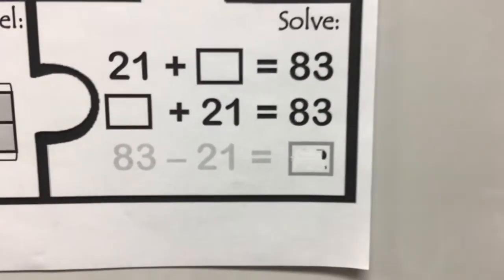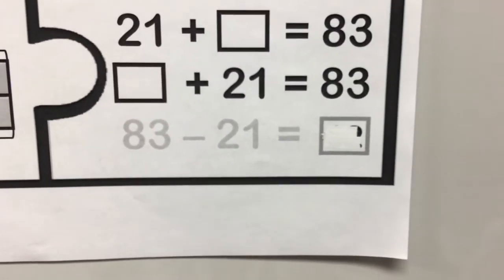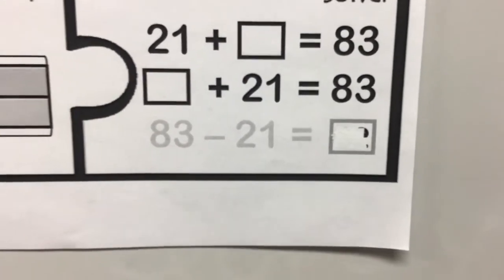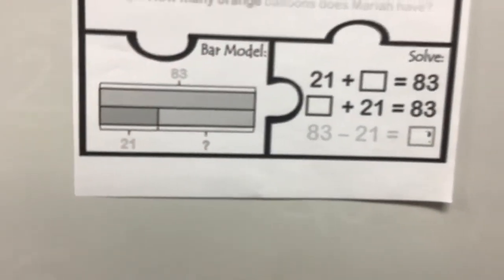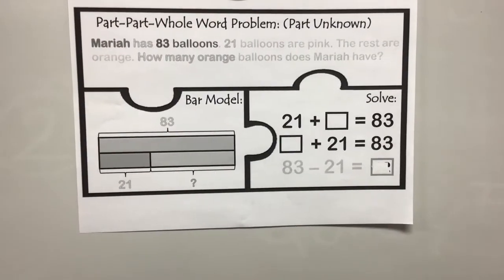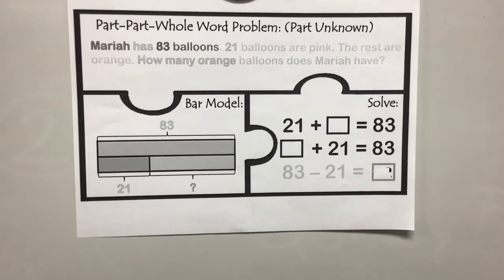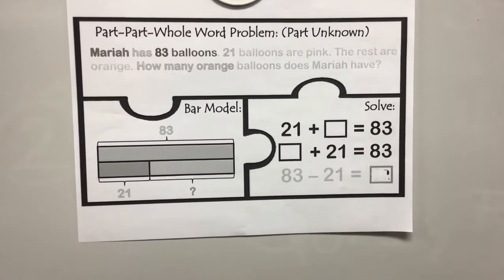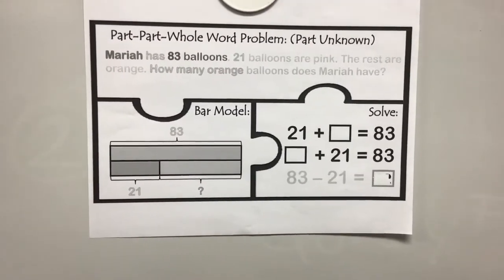So, 21 plus something equals 83. We can solve it by saying 83 minus 21. What does that equal? Go ahead and push pause and solve this problem, then watch the rest of the video to see the answer.